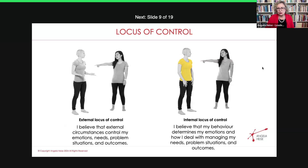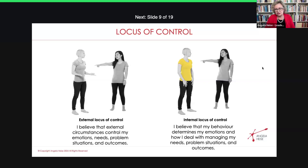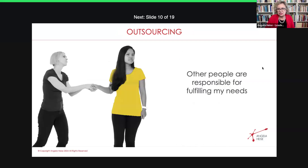An internal locus of control means I am in charge — I believe that I determine my life and how I manage my needs, how I solve my problems, and how I create outcomes. I would invite you to have a look at what happens when you get into a situation: where do you see the cause? If you get that sense of blame, it's probably because you've outsourced that responsibility to somebody else.